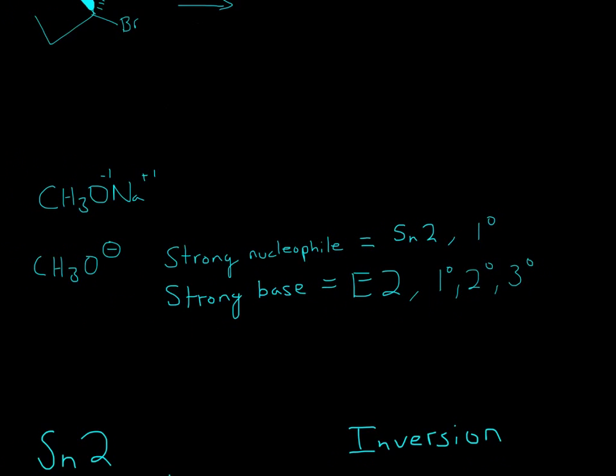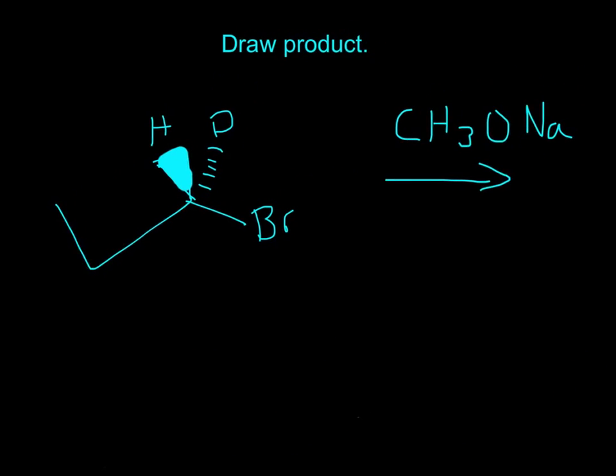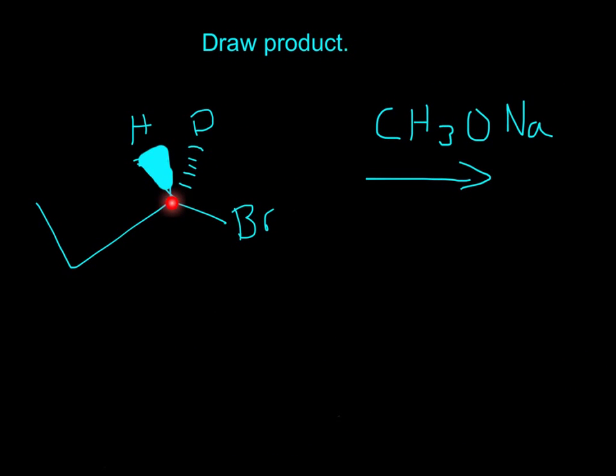So, with that being in mind, let's look at this. So, we have to figure out what type of carbon this is. Since Br is the leaving group, this is where it will attack.